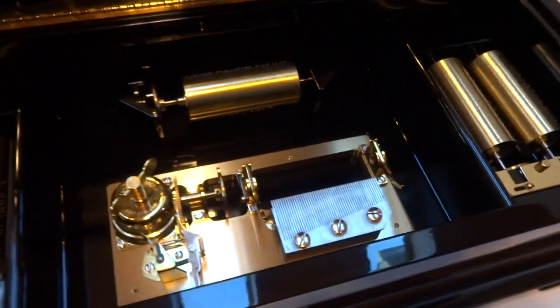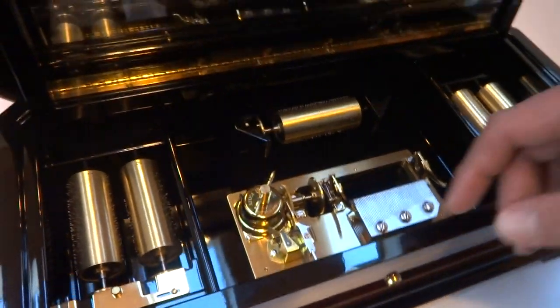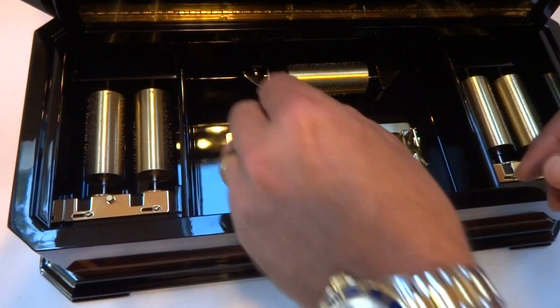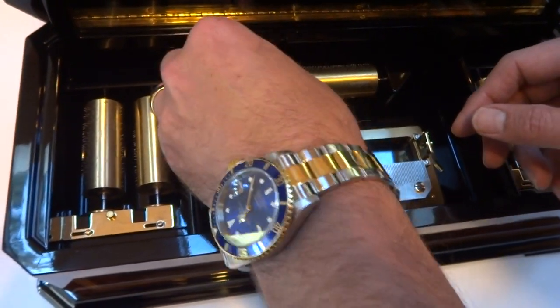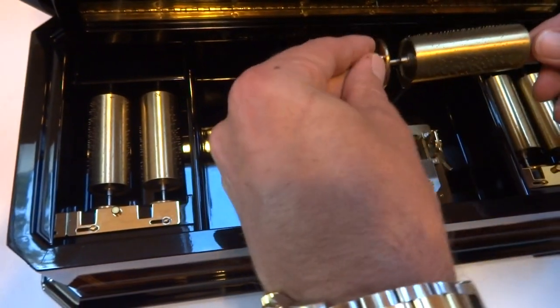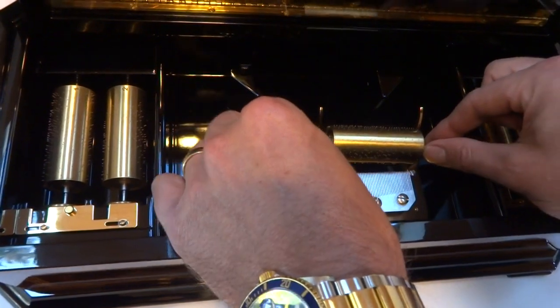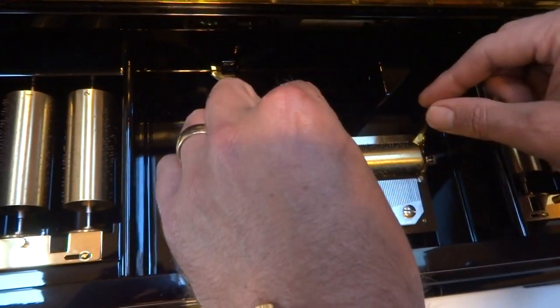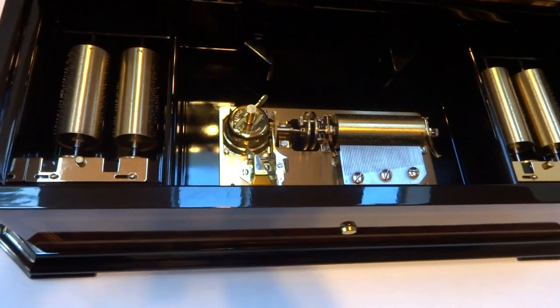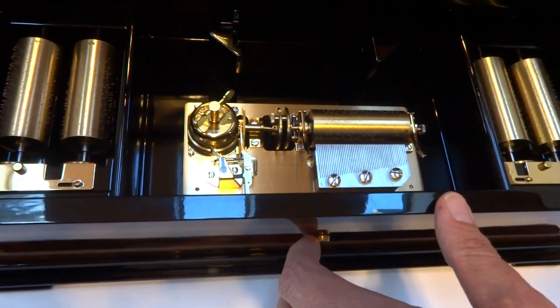I'm gonna have my lovely wife help me with this video. So there are actually five slots to store the discs. We're gonna start off with disc number three, and the cylinders can only go in one way. Then you lower the two arms. We're gonna start off playing Canon in D by Pachelbel.